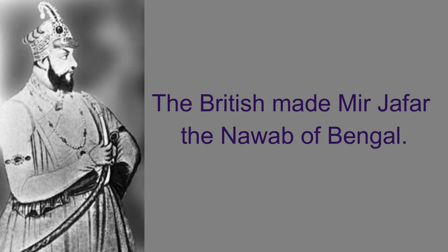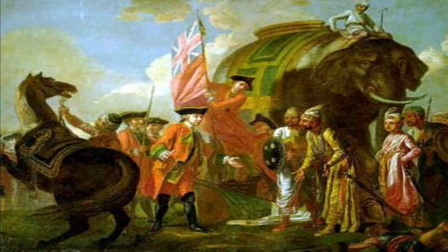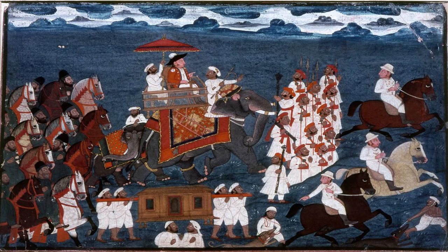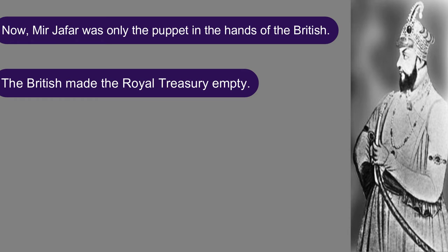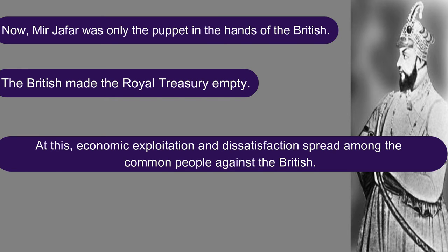The British got victory in this battle. They made Mir Jafar the Nawab of Bengal, and in return, Mir Jafar gave them a lot of money and estates. Thus, the victory of Plassey made the British financially strong and also paved the way for British rule in Bengal. Now, Mir Jafar was only a puppet in the hands of the British, and the British also made the royal treasury empty. Mir Jafar was unable to fulfill the growing demands of the British, so economic exploitation and dissatisfaction spread among the common people against the British.